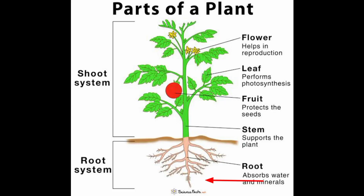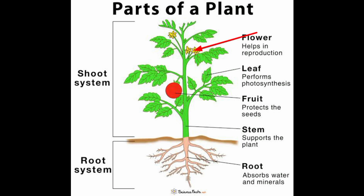Root absorbs water and minerals. Stem supports the plant. Fruit protects the seeds. Leaf performs photosynthesis. Flower helps in reproduction.